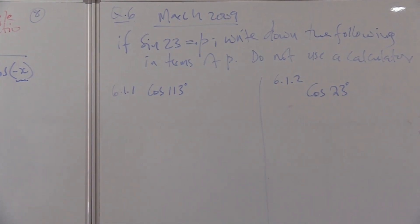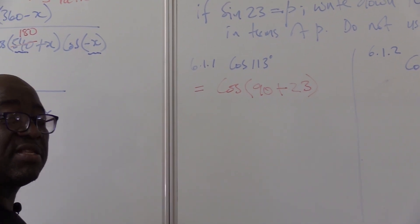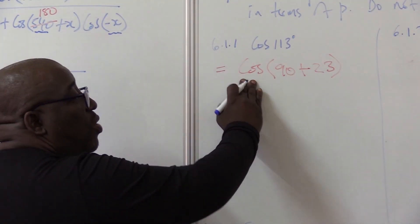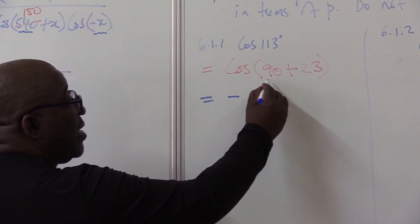Let's work it out. Cos 115°: 90 plus, which quadrant is that? It is the second quadrant. How is cosine on the second quadrant? Cosine is negative on the second quadrant. Because we've got 90,